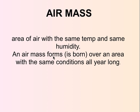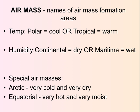Air masses form, or I like to say are born, over an area with the same conditions year round. You name the air mass based on where it forms. Temperature-wise, if something forms in the polar regions it tends to be a cooler air mass, versus something in the tropics, which tends to be a warm air mass.